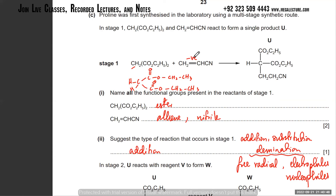Electrophiles get attracted to the negative double bond. What has happened is there used to be a double bond here between the carbon atoms, and this molecule - the carbon over here had a positive charge - got attracted to those electrons and kind of bonded with it. So it's an electrophilic addition reaction. The mark scheme just gives addition as the answer.